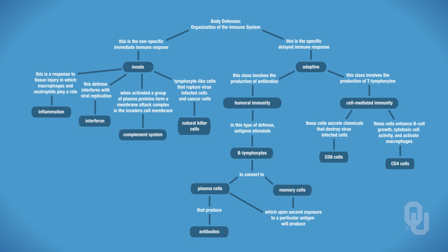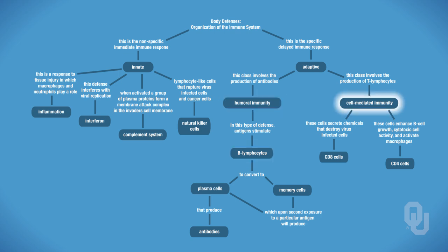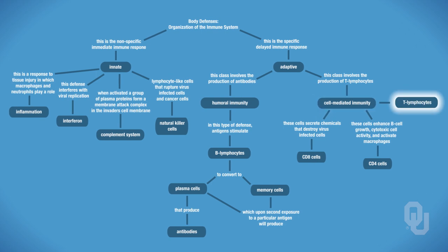We're dealing with the adaptive immune response, and this involves two different types of immunity: humoral immunity and cell-mediated immunity. Humoral immunity always involves B lymphocytes, while cell-mediated immunity always involves T lymphocytes. These two types of immunity both involve lymphocytes, however they involve different types of lymphocytes. We're going to look at characteristics of these lymphocytes before getting into how they actually function as part of the immune system.